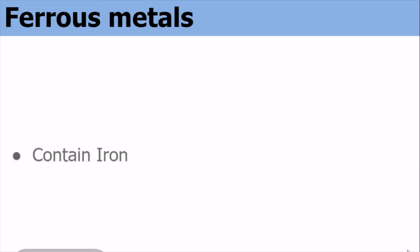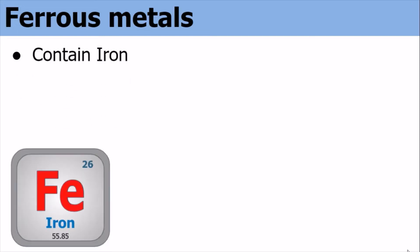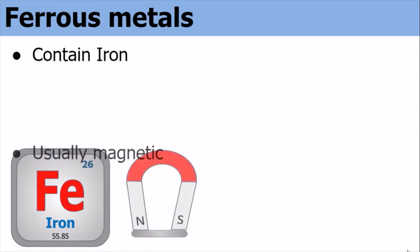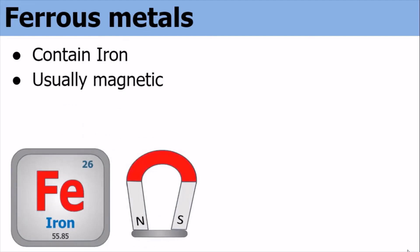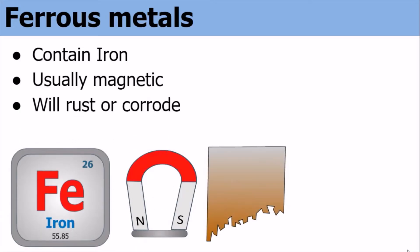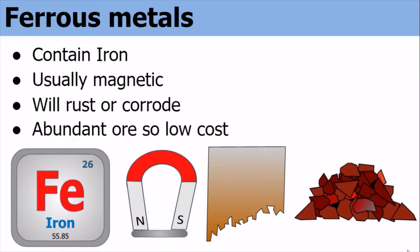Ferrous metals. These contain iron and are usually magnetic. They will rust or corrode if not protected with paint or similar. The ores are abundant, so iron is abundant and it's generally a low cost metal.